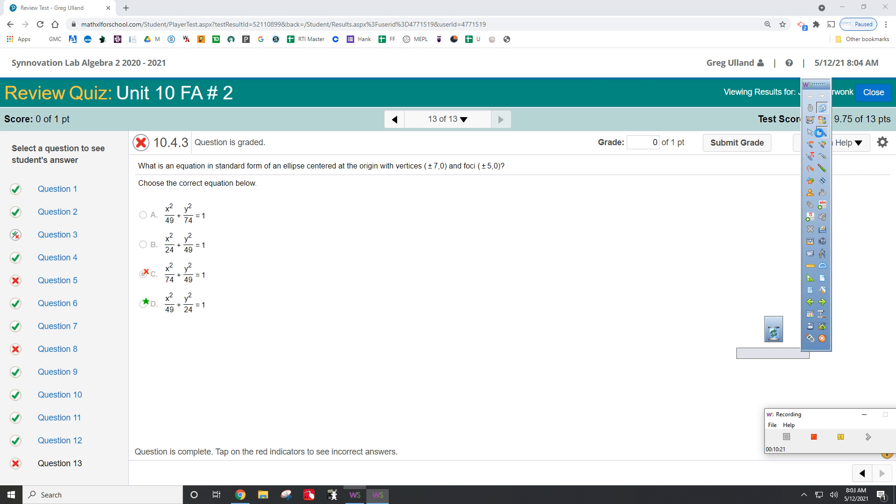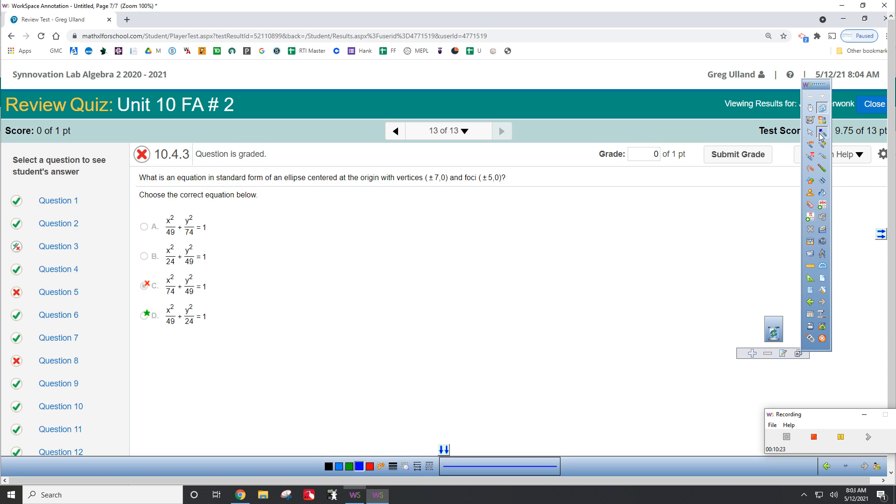Okay, let's see if I can fix this one now. Obviously, it's the hyperbolas that give me the biggest problem. Oh, this is an ellipse. So, for an ellipse, it's a squared minus b squared equals c squared.